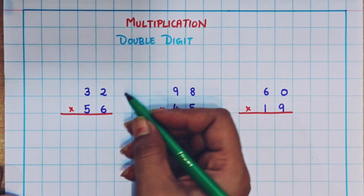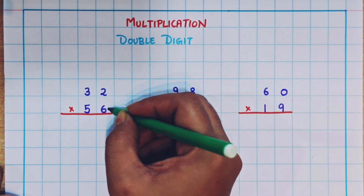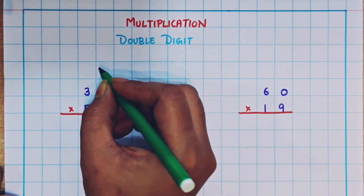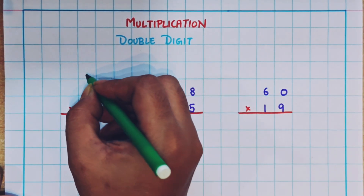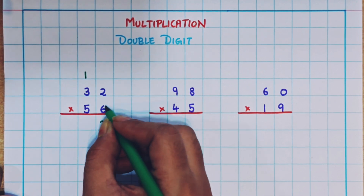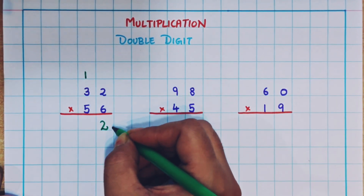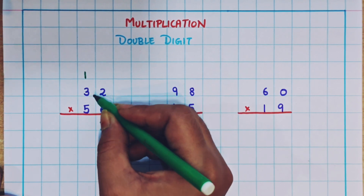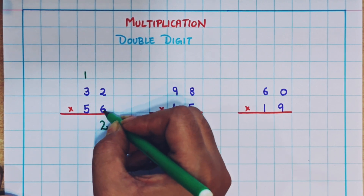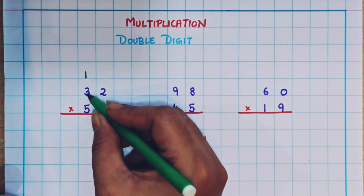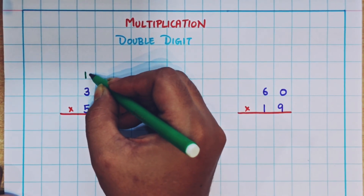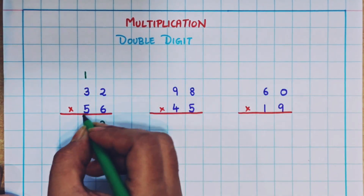We are going to multiply with the number in the ones place, that is 6. So first, 6 twos are 12. 12 is a two digit number, so 1 I will write as a carryover and 2 I will write here. Now next I'll multiply 6 into 3. 6 threes are 18, plus the carryover 1 is 19. So here I'll write 19.